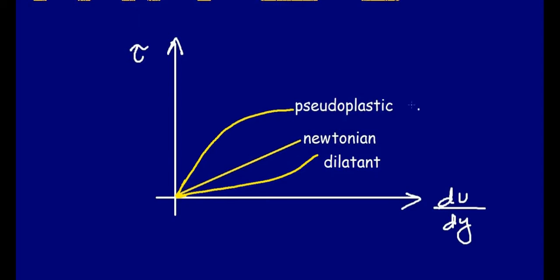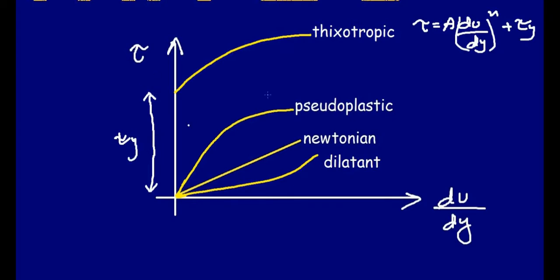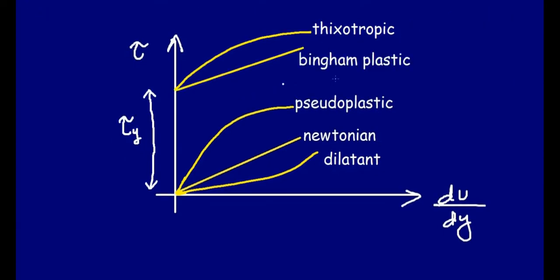Now let's study thixotropic fluid and Bingham plastic. For thixotropic fluid, the equation is tau = A(du/dy)^n + tau_y, where tau_y is a non-zero initial stress and n is less than 1. The gap on the y-axis represents tau_y, the initial stress. For Bingham plastic, the plot is a straight line with an initial stress of tau_y — this straight line with a y-intercept is the Bingham plastic curve.